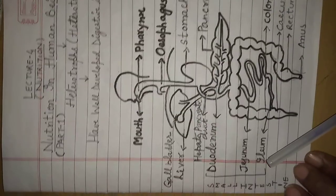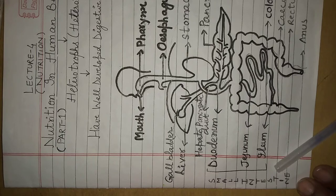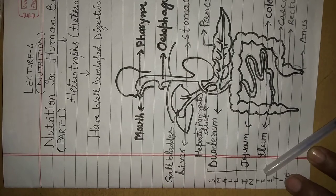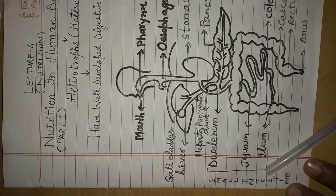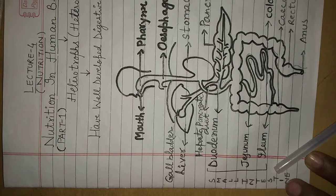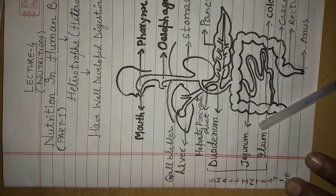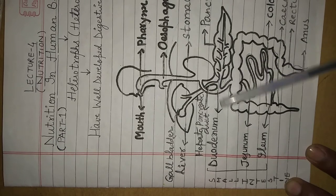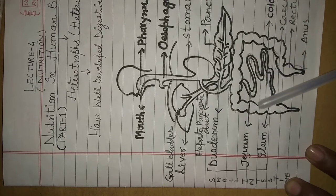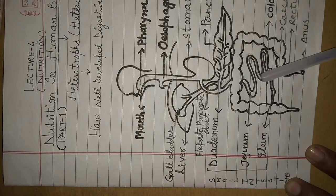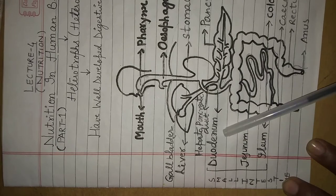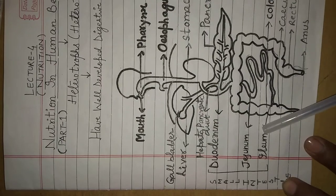Next one is the small intestine. Small intestine elementary canal ka sabse longest part hota hai. Agar elementary canal 9 meters ka hai, toh small intestine 6 meters ki tube hoti hai. Small intestine 3 parts mein subdivided hoti hai: duodenum, jejunum, and ileum. The C-shaped structure visible in the diagram is the duodenum, which is the first part of the small intestine. Duodenum opens into a long tube called jejunum, and jejunum continues into the last part called ileum.